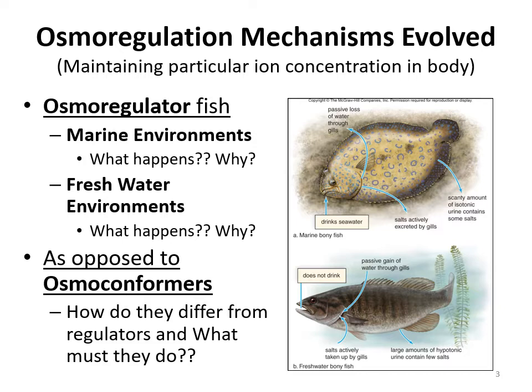Marine fish drink seawater to take in water, then excrete the excess salts through their gills and urine — yes, fish do pee. So in a marine environment, it's a high-salt environment where the fish loses water, drinks seawater, and excretes excess salts through gills and urine.